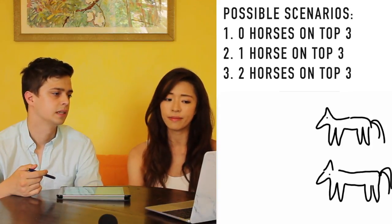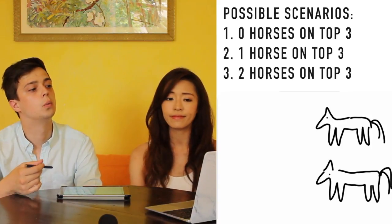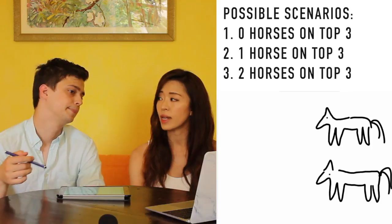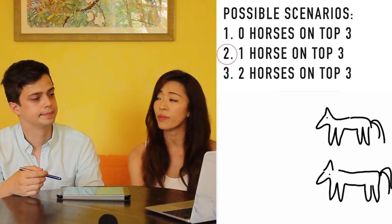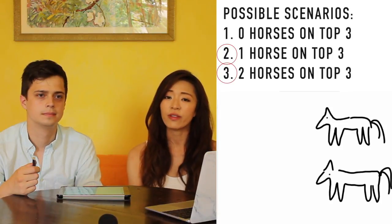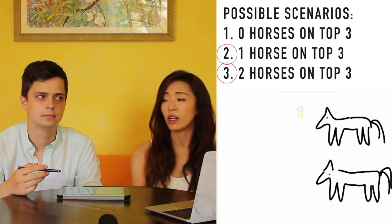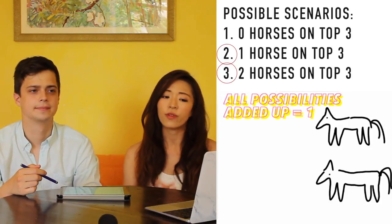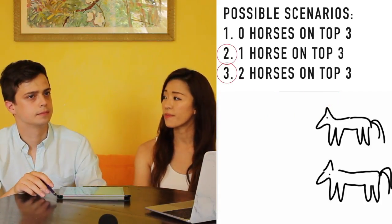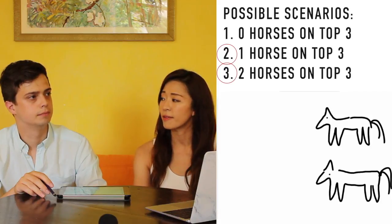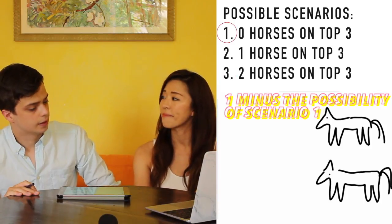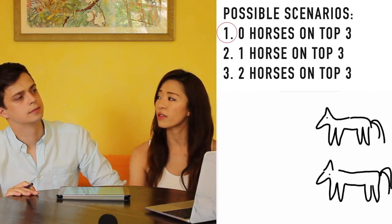So which one are we looking at in this question? We're looking for the possibility of having at least one horse placing in the top three. So it means one horse placing in the top three or two horses in the top three. For probability, we know that all the different scenarios will add up to a probability of one. So if we just want to find the chance of having at least one horse placed in the top three, we can do one minus the possibility of it not happening — which is no horses placed in the top three. What is the chance of having no horses placed in the top three?